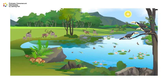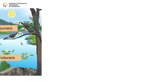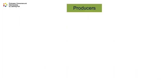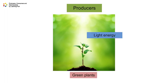In an ecosystem, organisms can be classified as producers, consumers, and decomposers. Producers are green plants that produce their own food through photosynthesis. Green plants convert light energy from the sun into chemical energy.